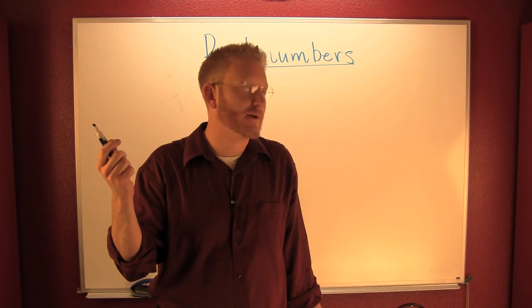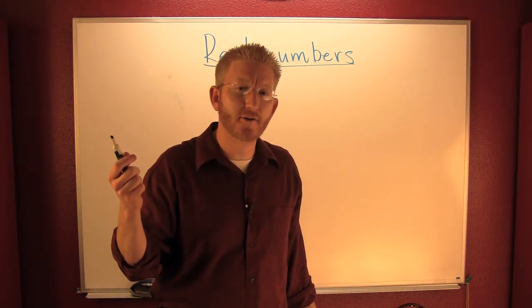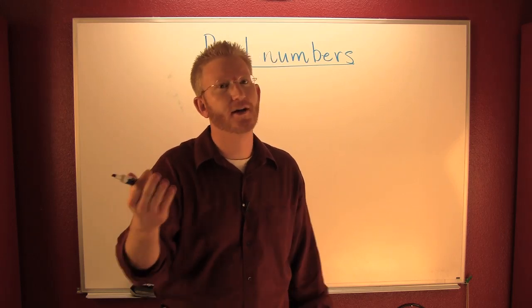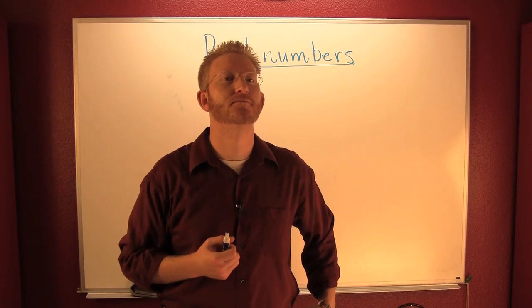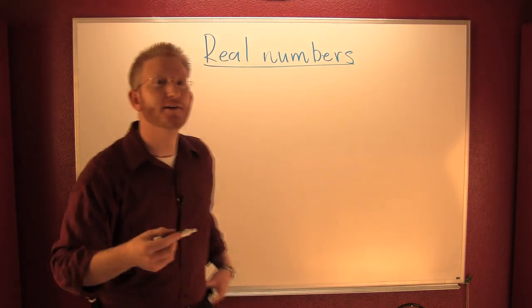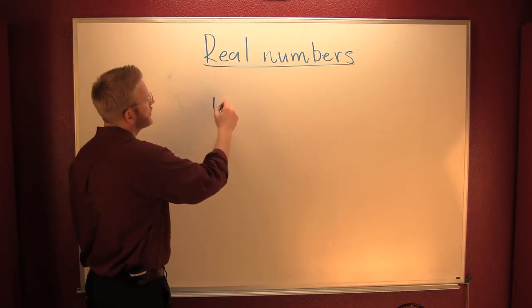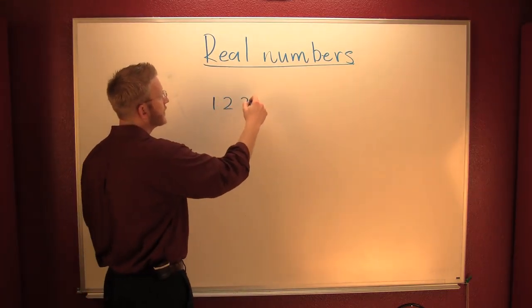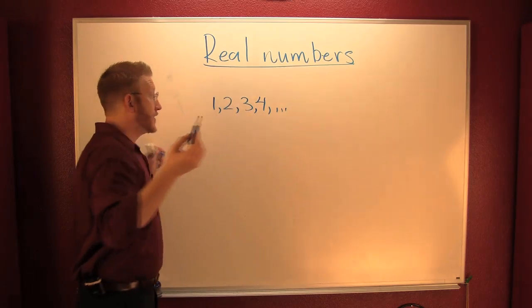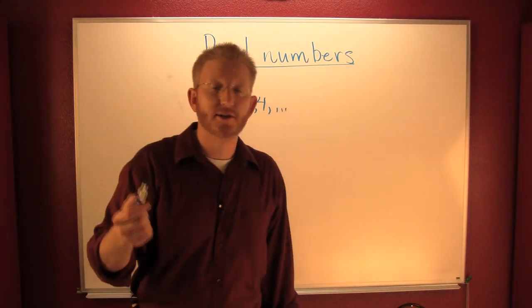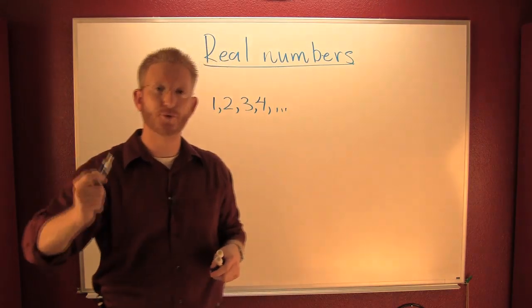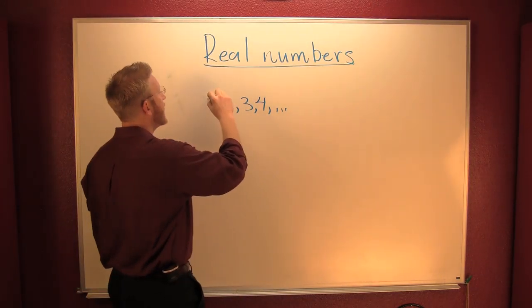I need you to do something for me. Can you count for me? Go ahead, count for me. No, seriously — I know you're just sitting there watching, count. You went one, two, three, four. You started at one, then you went to two, then you went to three, then you went to four. I asked you to count and you naturally went one, two, three, four. These are the natural numbers.